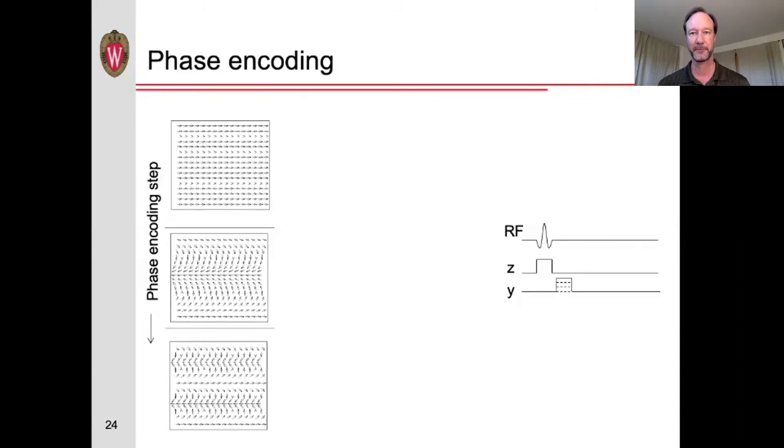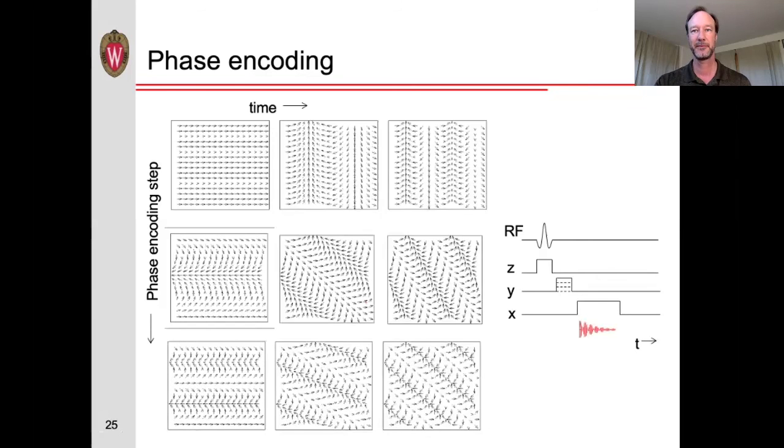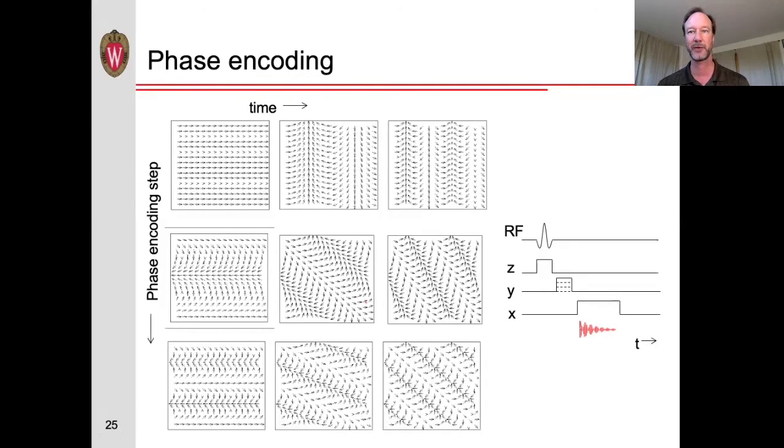Now let's look at phase encoding. If we don't apply any phase encoding, then when we acquire the data, all the magnetization vectors are still pointing in the same direction. If we apply a small phase encoding gradient, then the magnetization vectors are twisted up along the y axis. If we apply an even stronger phase encoding gradient, the magnetization vectors are even more twisted up. When we then acquire the data, the top row shows what happens without any phase encoding. The second row shows the data when we acquire with a small amount of phase encoding, and so on.